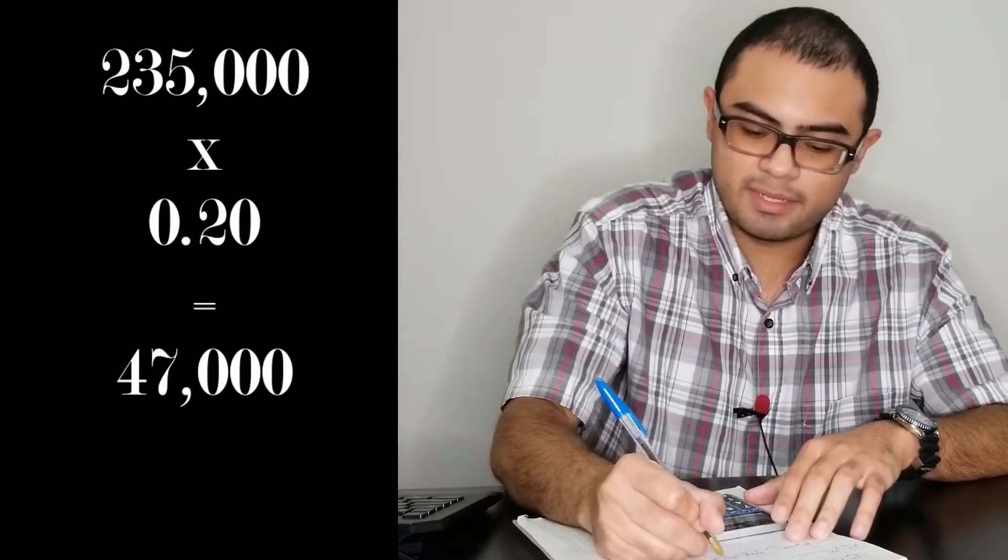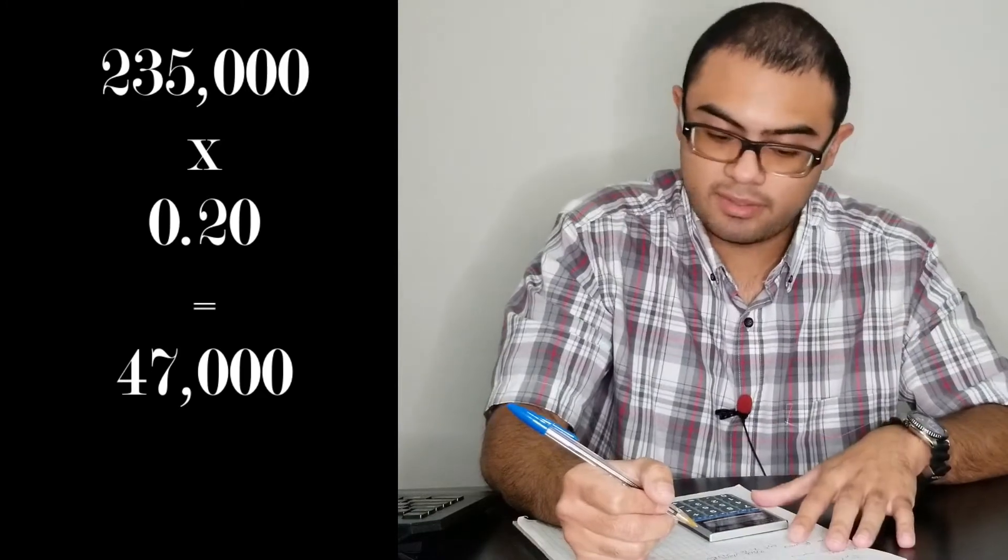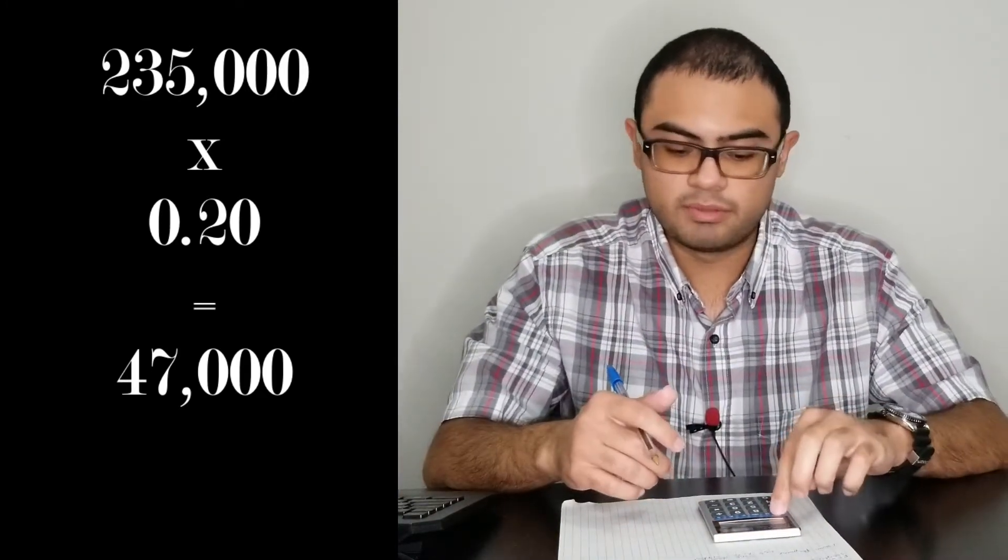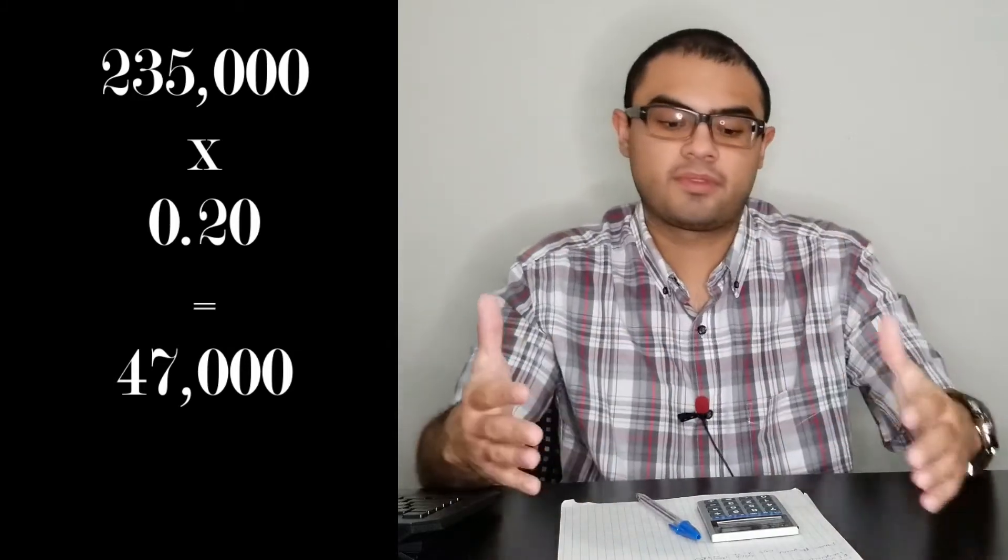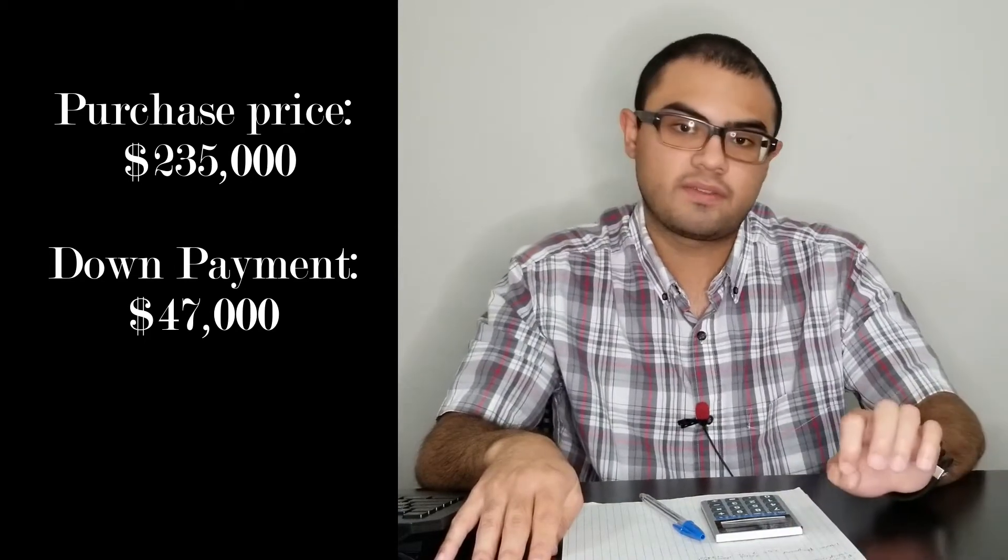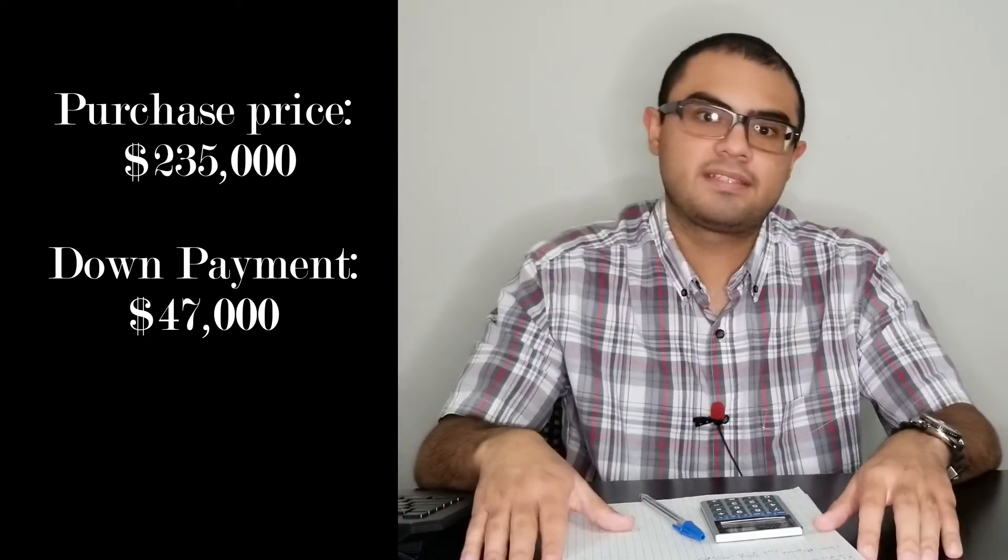So $235,000 purchase price, times 20%. We're just doing down payment. That would mean that your down payment, if you're going to put 20% down, would be about $47,000. Boom, right there. Now you know. That's our next goal. You're trying to buy a $235,000 house, putting 20% down. Maybe it's an owner finance deal, maybe it's a conventional deal, a hundred different scenarios. Now you can move your goal to $47,000.